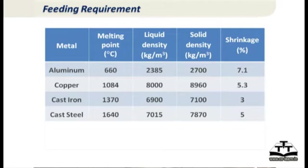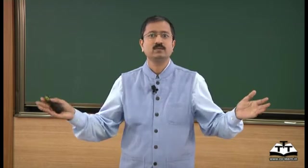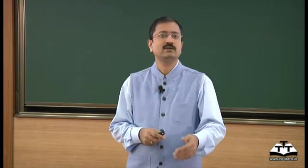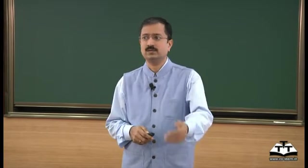How much feeding volume is actually needed? Comparing only the liquid density and solid density (not pouring density), for aluminium it is 7 percent, copper 5 percent. Cast iron is really low — it can be as low as 1.5 to 2 percent for low-grade cast iron because it partly expands. Steels can be as high as 5 percent. In general, the range is from about 2 percent for low-grade grey irons to as high as 5, 6, or 7 percent for some steels and aluminium alloys.